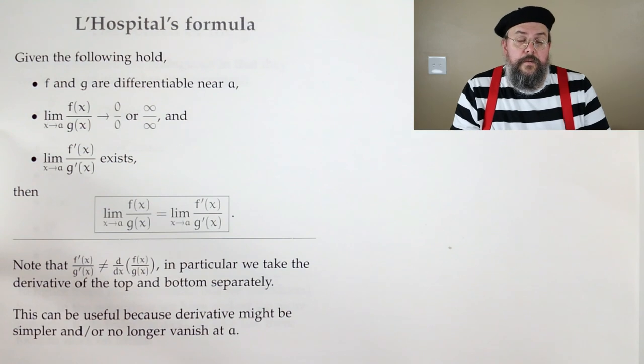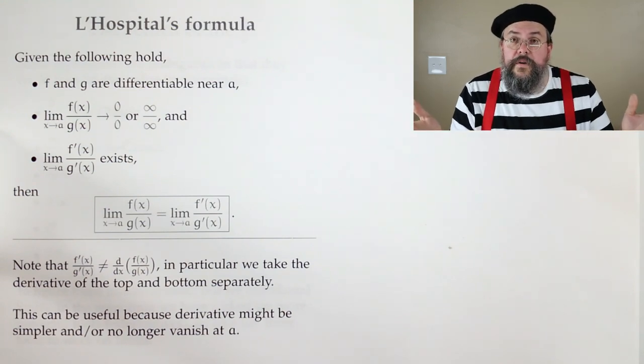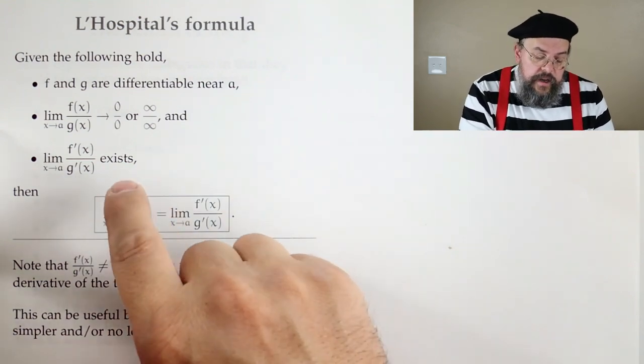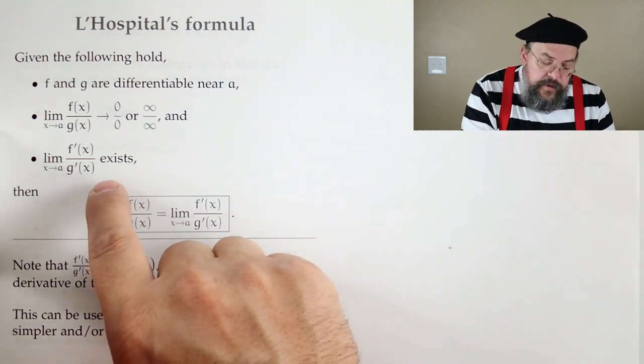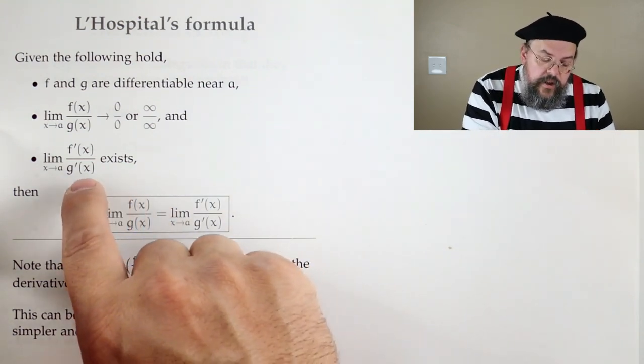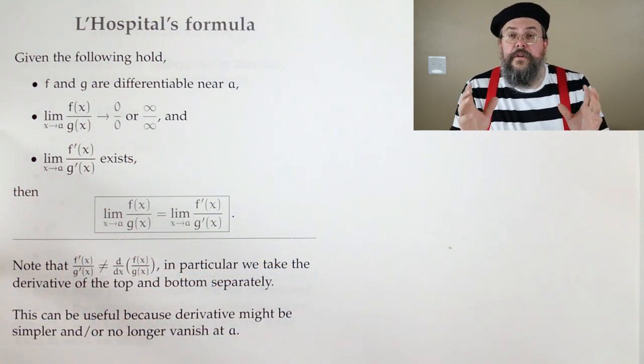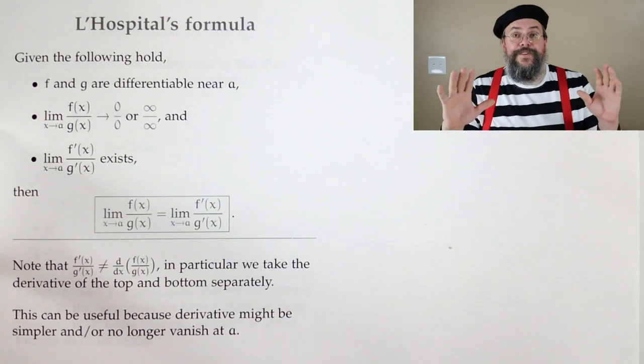Well, that makes sense, because if we knew what it was, we wouldn't do anything. So it has to be something that we don't know what it is. And the last thing, and this is sometimes we don't mention, is that the limit, this new limit, has to exist. So if the new limit exists, life is good.